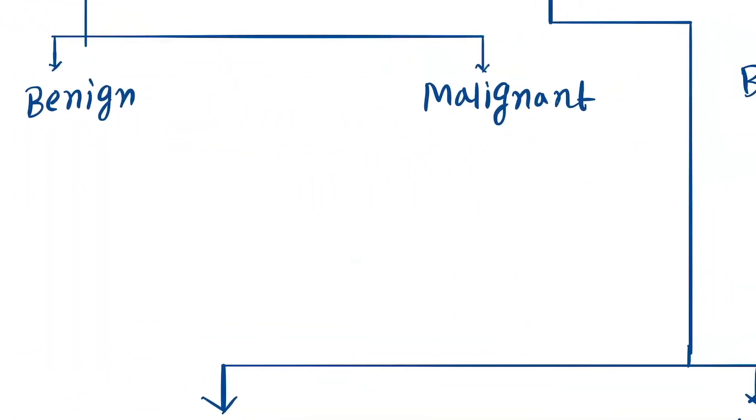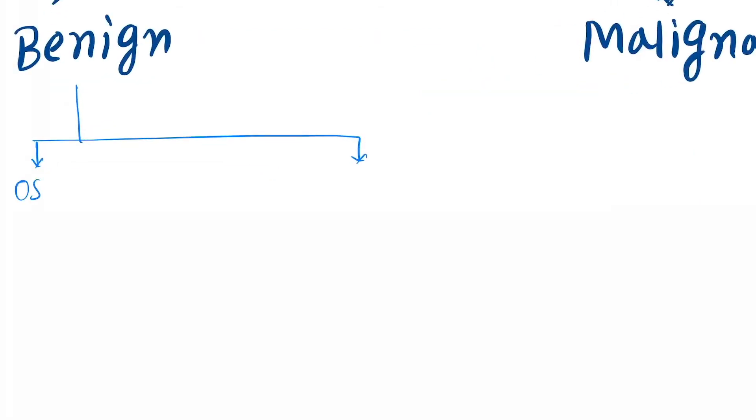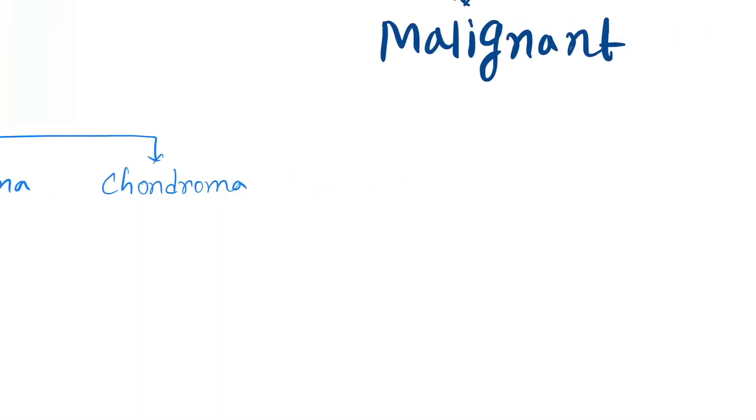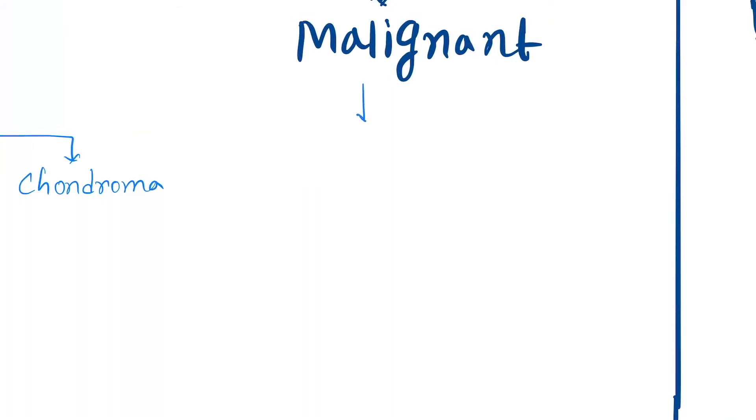Okay, so in cartilage forming, the benign tumors are divided into two parts. First one is osteochondroma and another one is chondroma. Malignant tumor is chondrosarcoma.